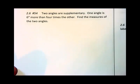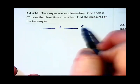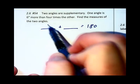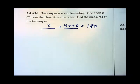Next problem. Two angles are supplementary. That means they're going to add up to 180. One angle is six more than four times the other.